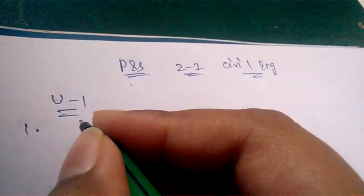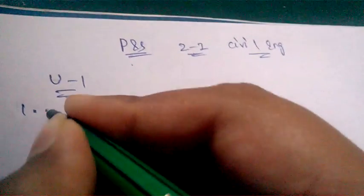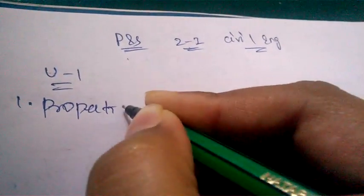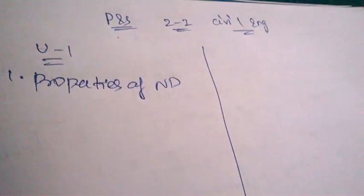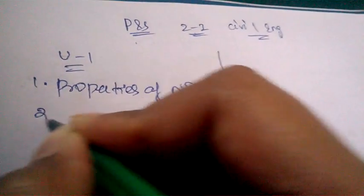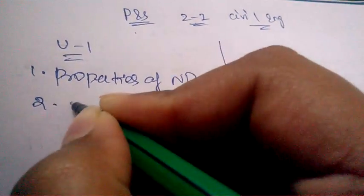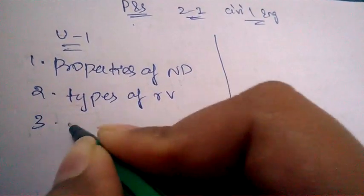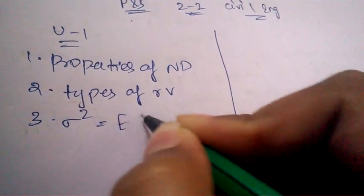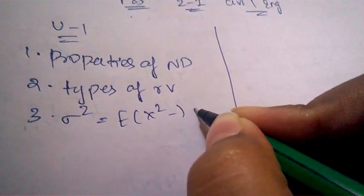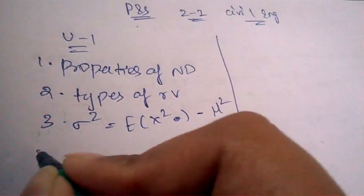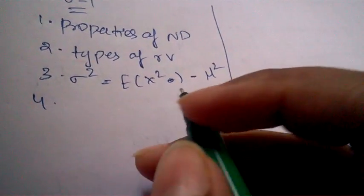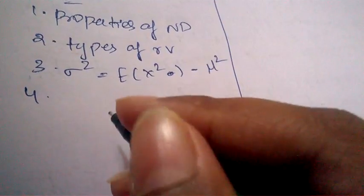The important questions are: write the properties of normal distribution, different types of random variables, and prove sigma squared equals E of x squared minus mu squared. Also, explain probability distribution for both discrete as well as continuous.